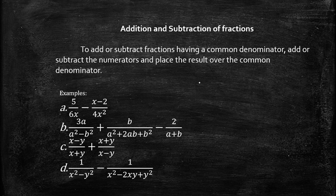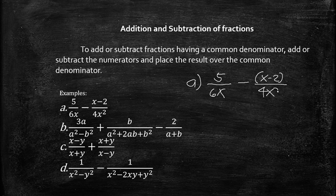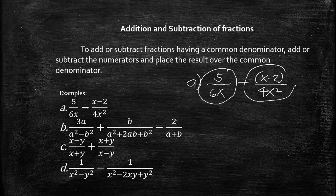Let's try letter A. In letter A, I have here the expression 5 over 6x minus (x minus 2) over 4x squared. We're going to find the least common denominator of both expressions. The least common denominator is 12x squared. So 12x squared divided by 6x equals 2x, times 5.